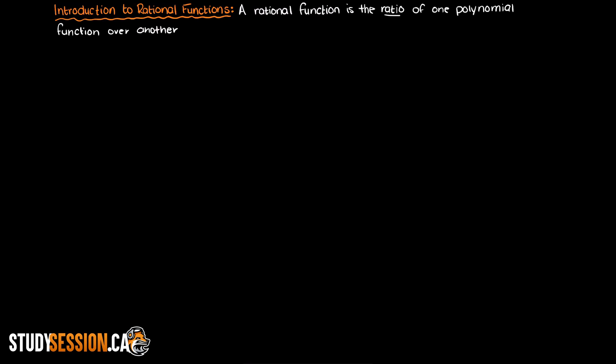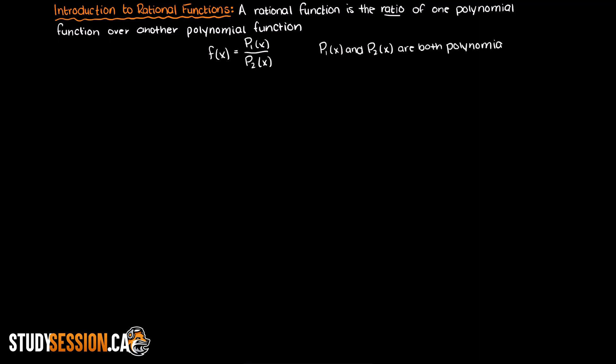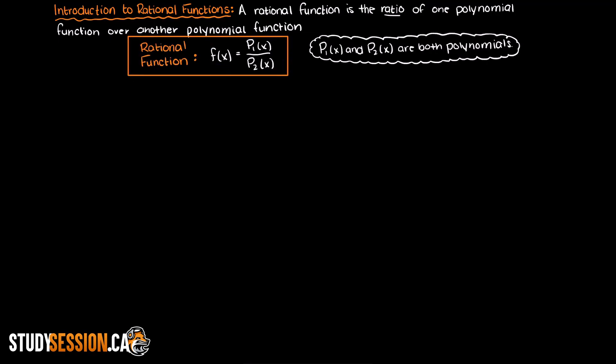A rational function is a ratio of one polynomial function over another polynomial function. Here p1 and p2 are both polynomials. So we are saying for some input x, the output y or f of x is going to be the ratio of polynomial 1 to polynomial 2.